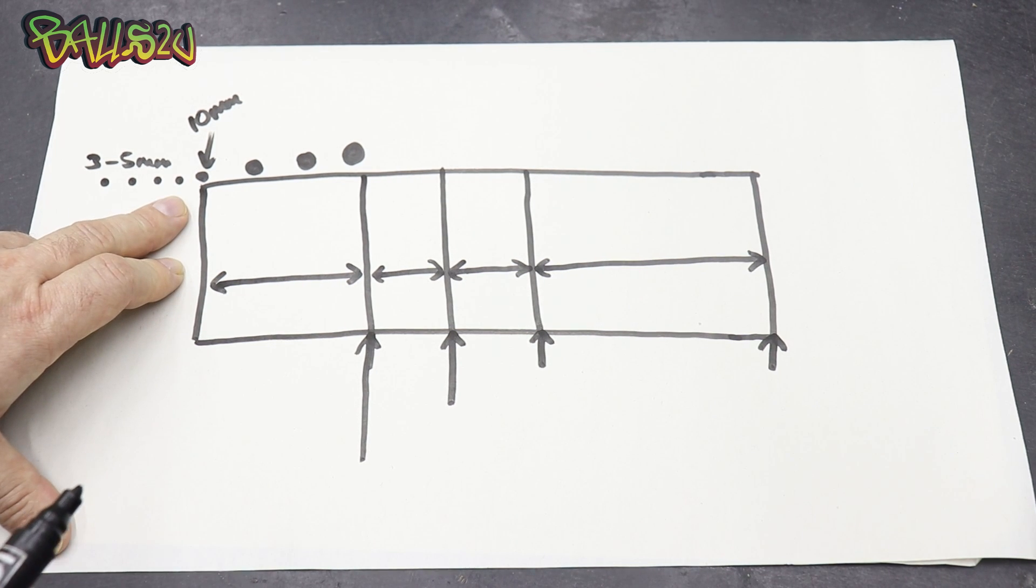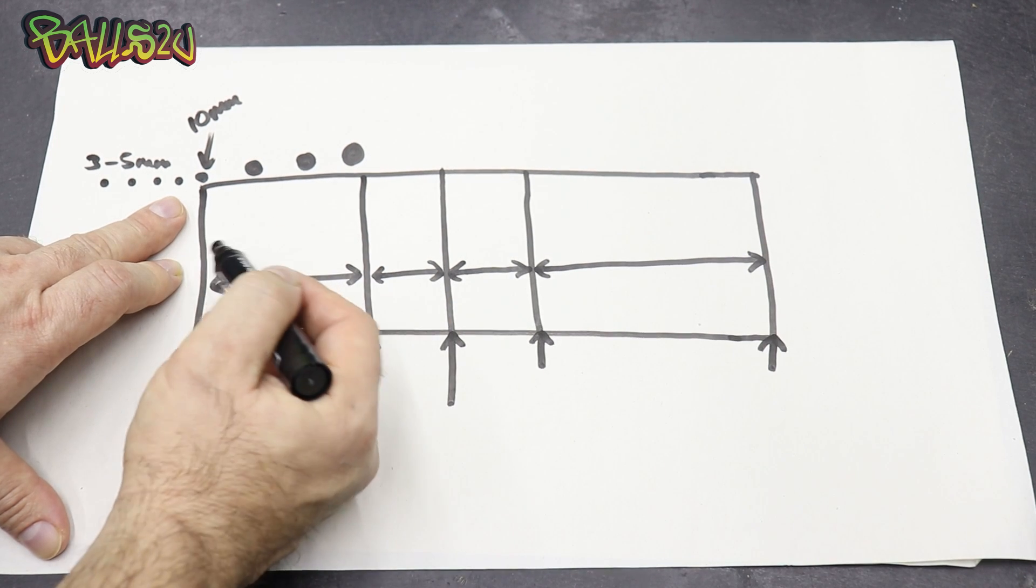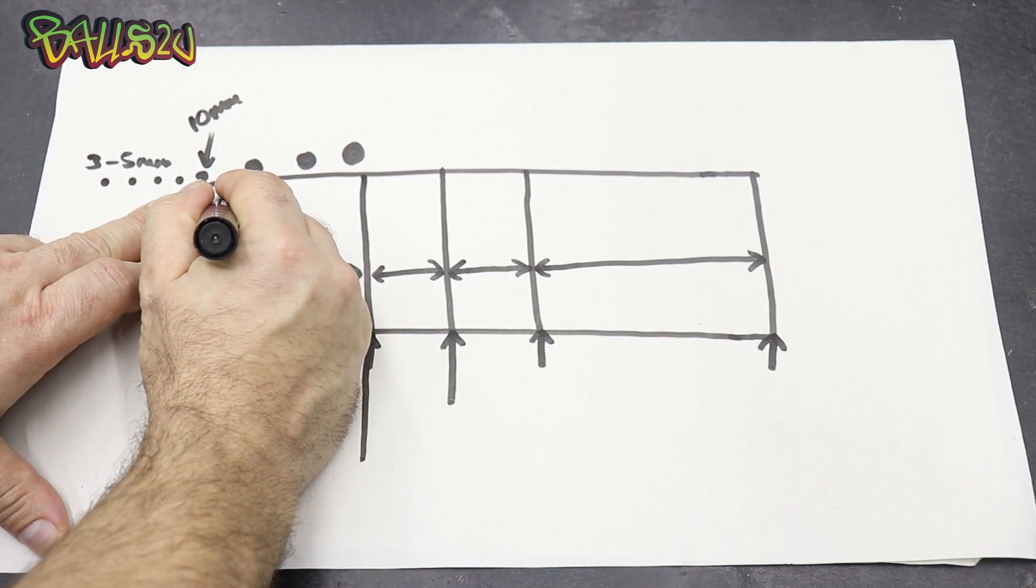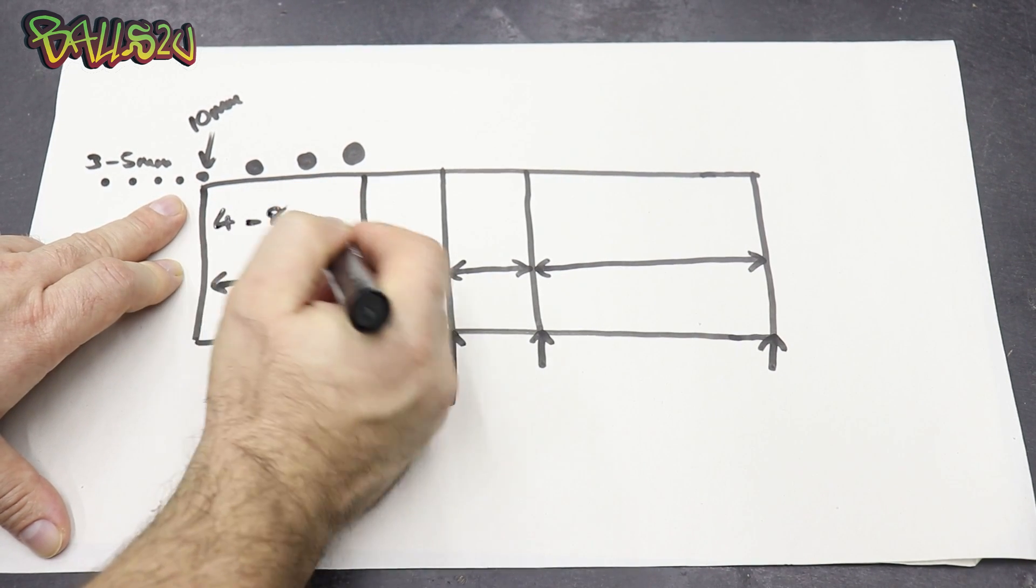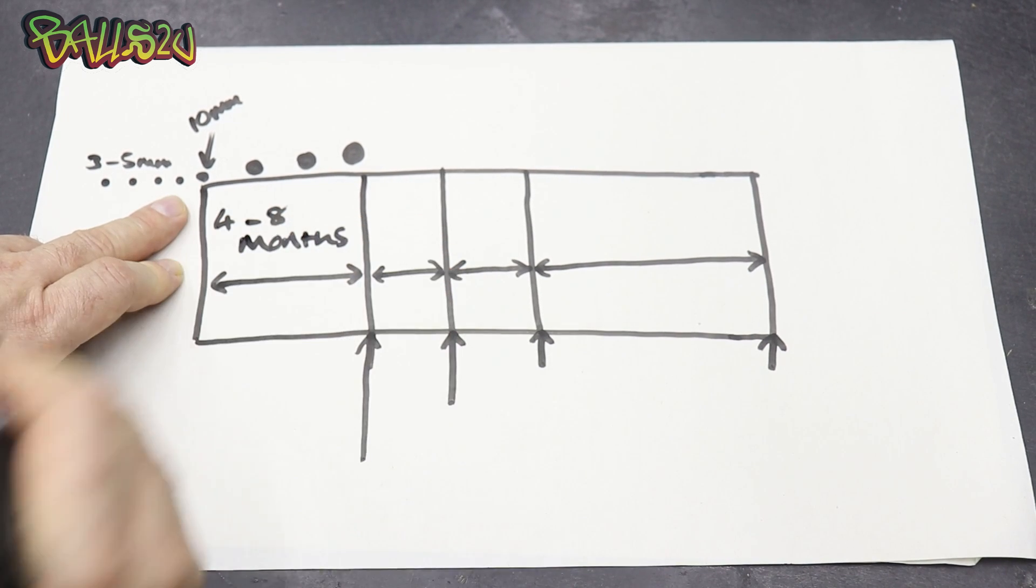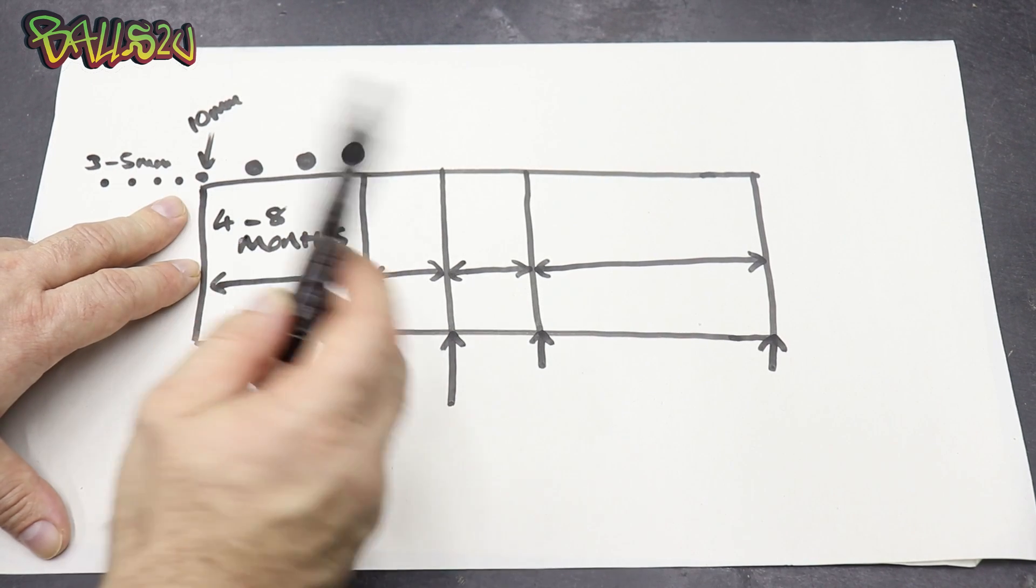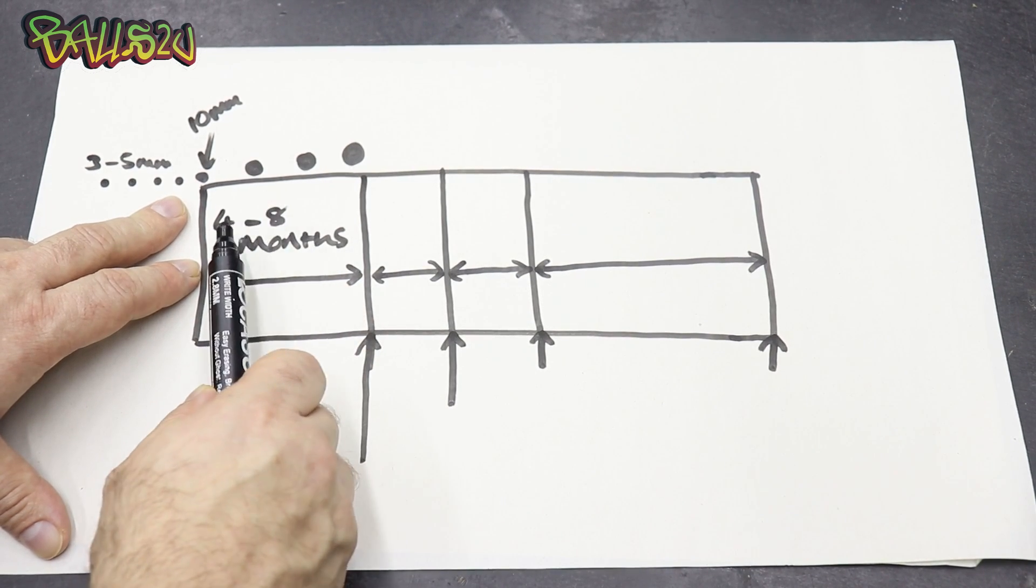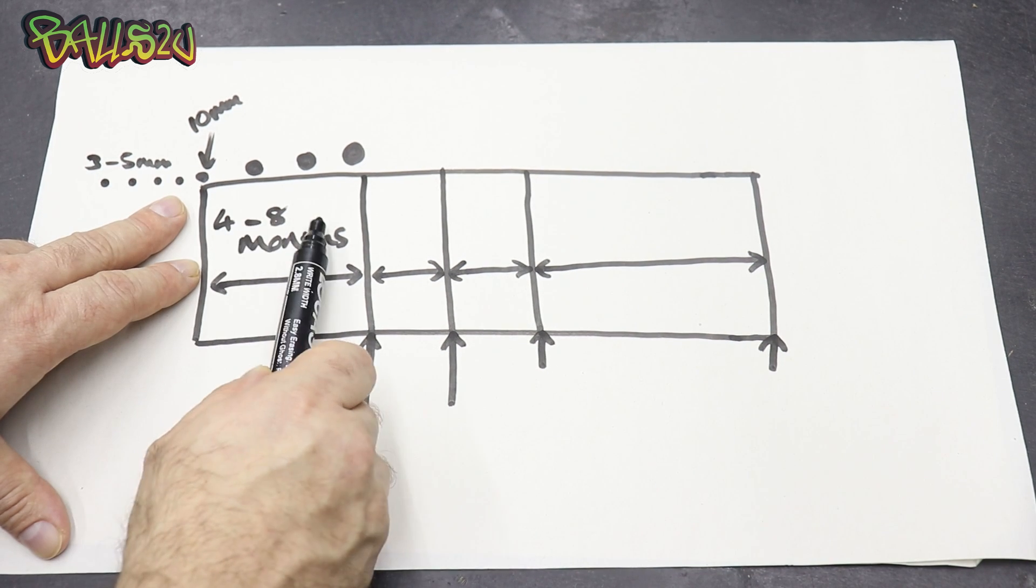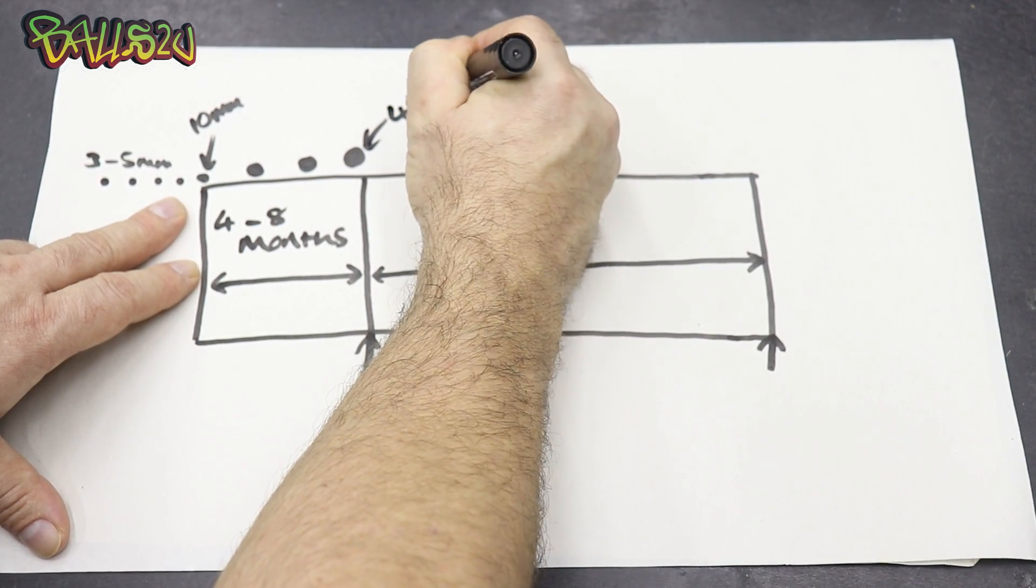So let's start very simple. This part here is how long it can take to grow follicles for a female. This period tends to be four to eight months. Again, depending on the female, the temperatures, the maturity, a female can take anything from four months to eight months to grow them follicles up to 45 millimeters.